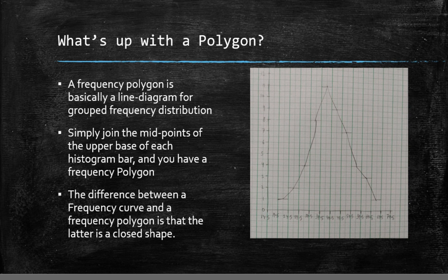Now what's a frequency polygon? It's basically the line diagram of a frequency distribution. You can get a frequency polygon from a histogram by simply joining the midpoints of the upper base of each bar in a histogram by straight lines. The graph I have made is not accurate for I made it in a hurry.